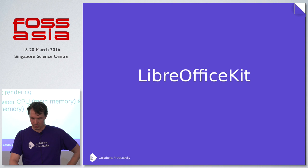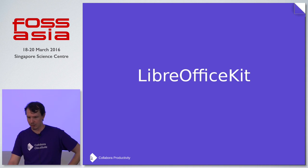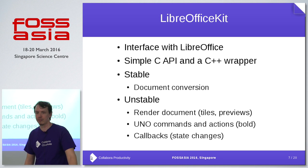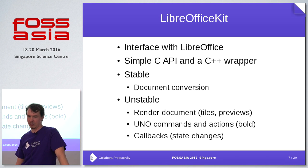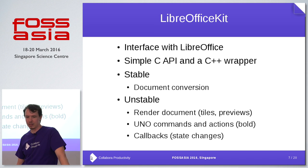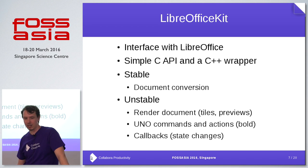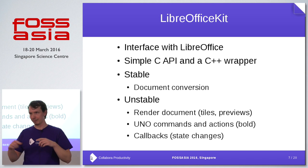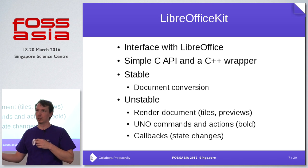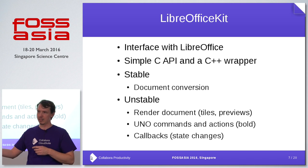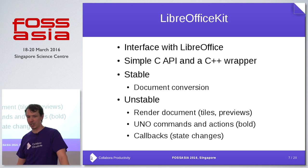The next thing I want to talk about is LibreOffice Kit. This is an interface for LibreOffice — a simple C and C++ API that you can interface with LibreOffice. There is a stable API that is generally used for document conversion currently. But we also have an unstable API that supports rendering of text and commands — like bold and italic — you can send this command and the current cursor will be changed to bold.